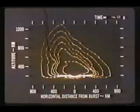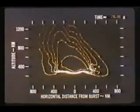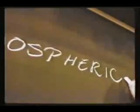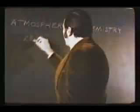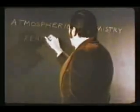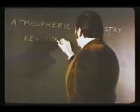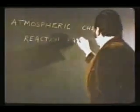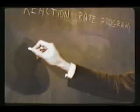The computer program that calculated the electron density shown in the first part of this film, the RANK program that computes radar performance, and computer programs used to predict communication systems performance, all have a common base: knowledge of the atmospheric chemistry. Much of our present capability in modeling the chemistry of the atmosphere has been made possible by research performed under the reaction rate program. One major achievement was the successful measurement in the laboratory of two reactions of uranium with oxygen.